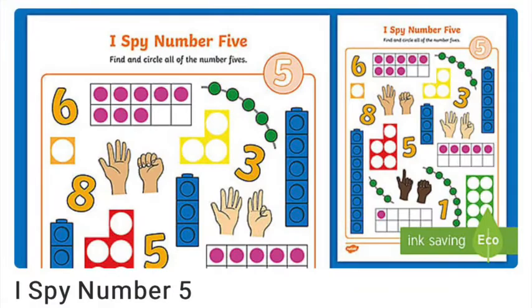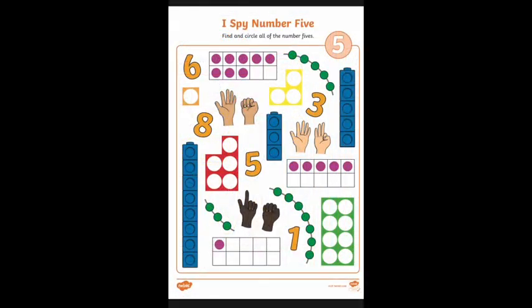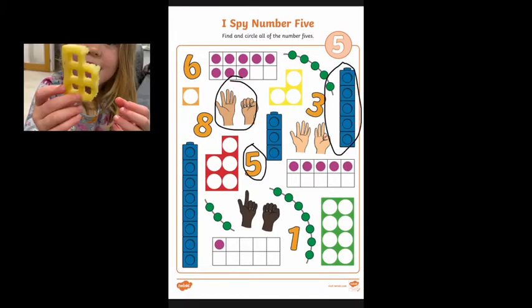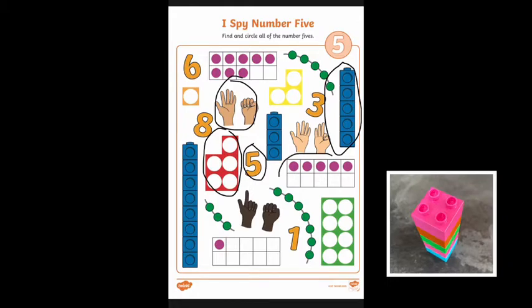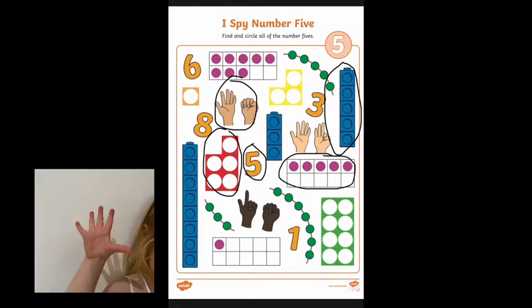Let's have a look at this sheet focused on the number five. How many different representations of the number five can children spy? They could then have a go at using resources to copy these arrangements or make their own.